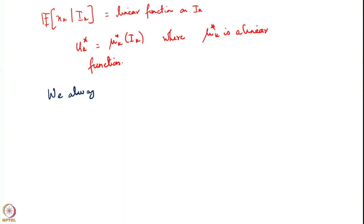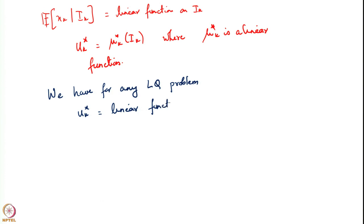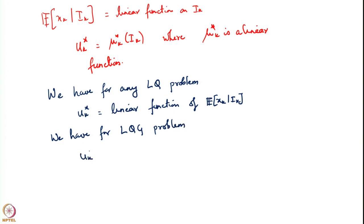To summarize: for any LQ problem, u*k is a linear function of the conditional expectation of the state given information. For the LQG problem, u*k is a linear function of I_k, since the conditional expectation is itself a linear function of I_k.